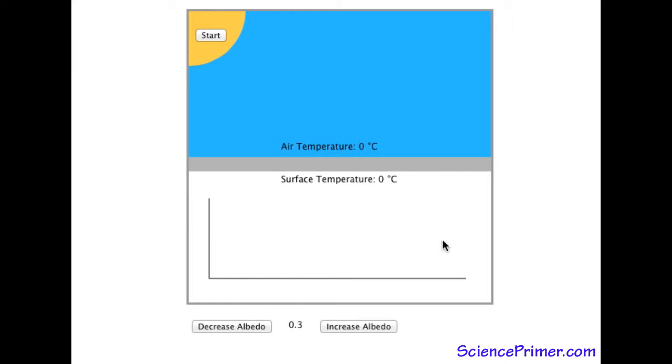The white area below the surface will show a graph of the surface and air temperatures. The graph also updates automatically as the illustration runs. When the illustration first loads, the surface albedo is 0.3. The temperature of both the air and the surface are 0 degrees C.